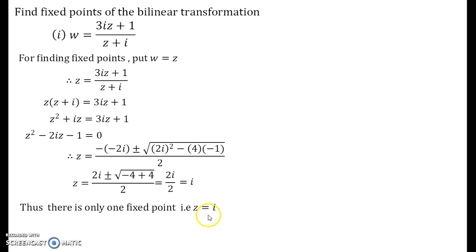By the previous definition that we had seen that is a bilinear transformation having only one fixed point is known as parabolic. So this is a parabolic bilinear transformation. This is how you find it and it's very easy.